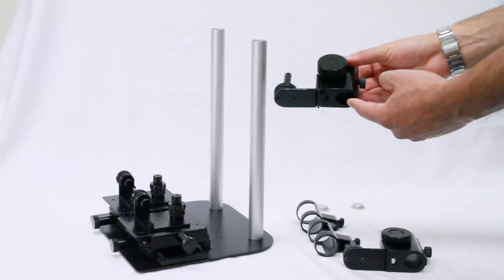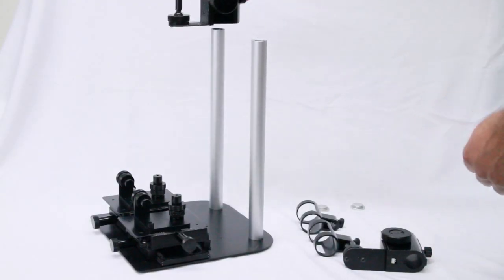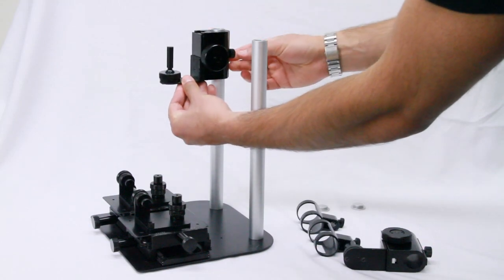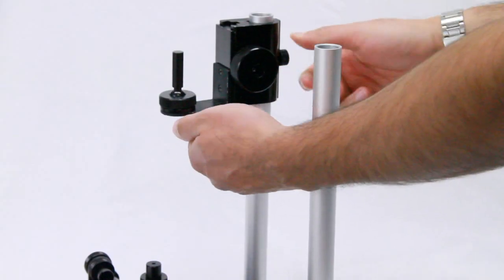Next, place the fine adjustment blocks onto each pole with the pegs facing up. Tighten the rear set screw to secure the desired height.